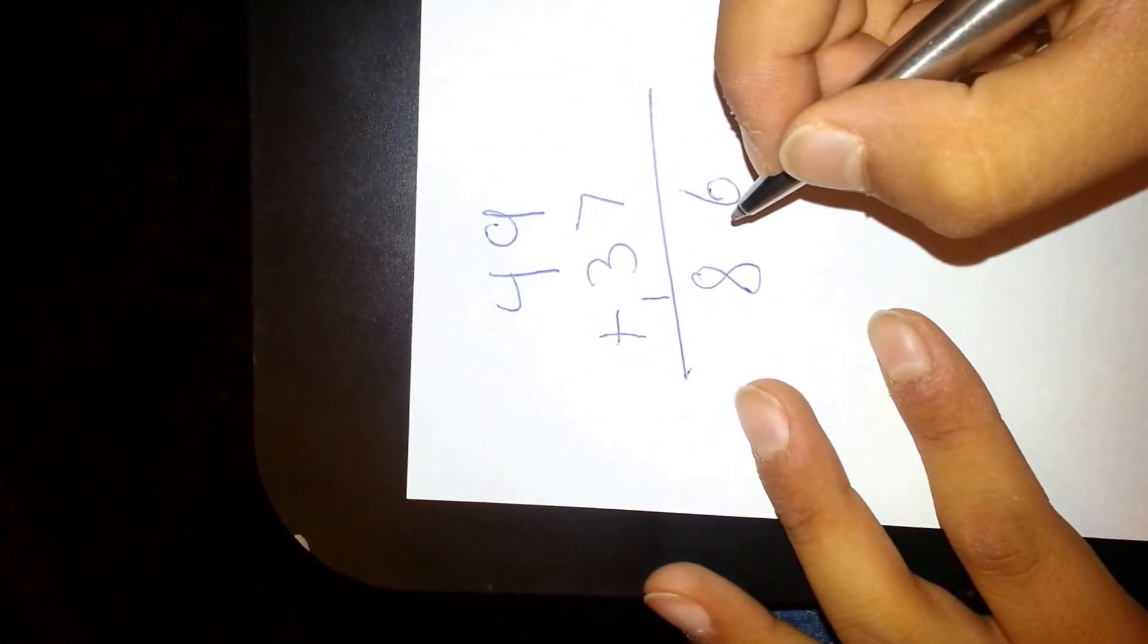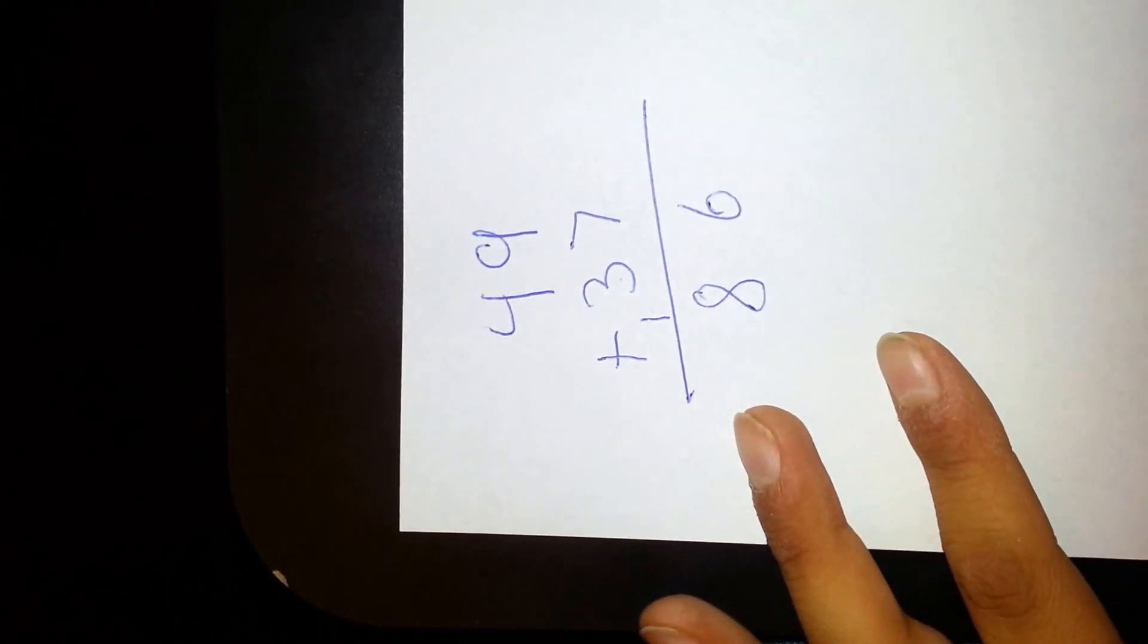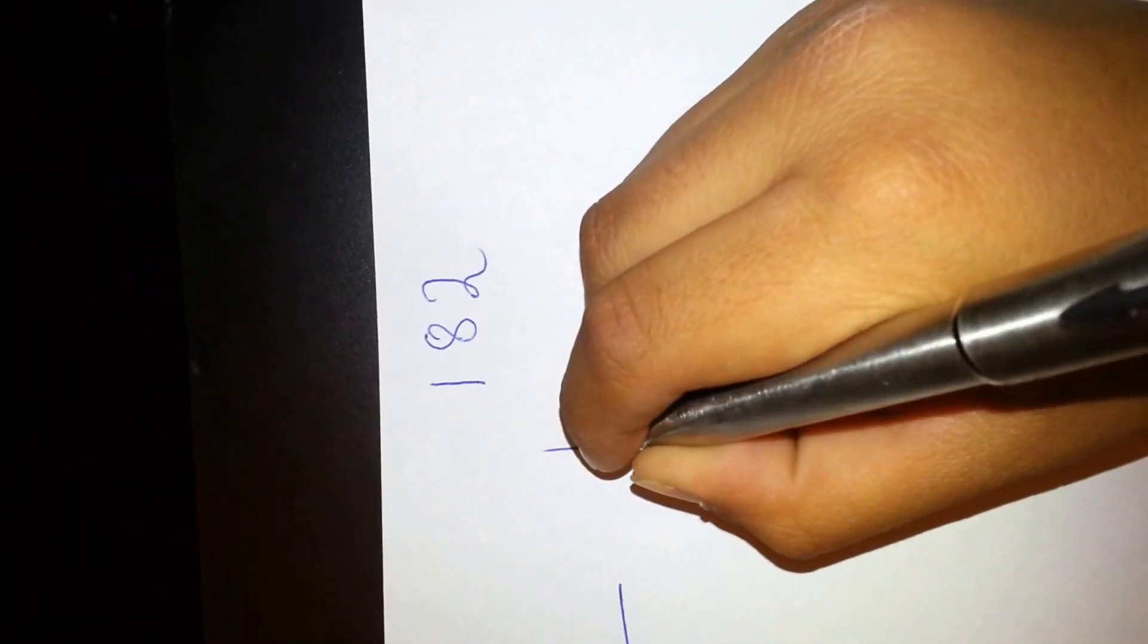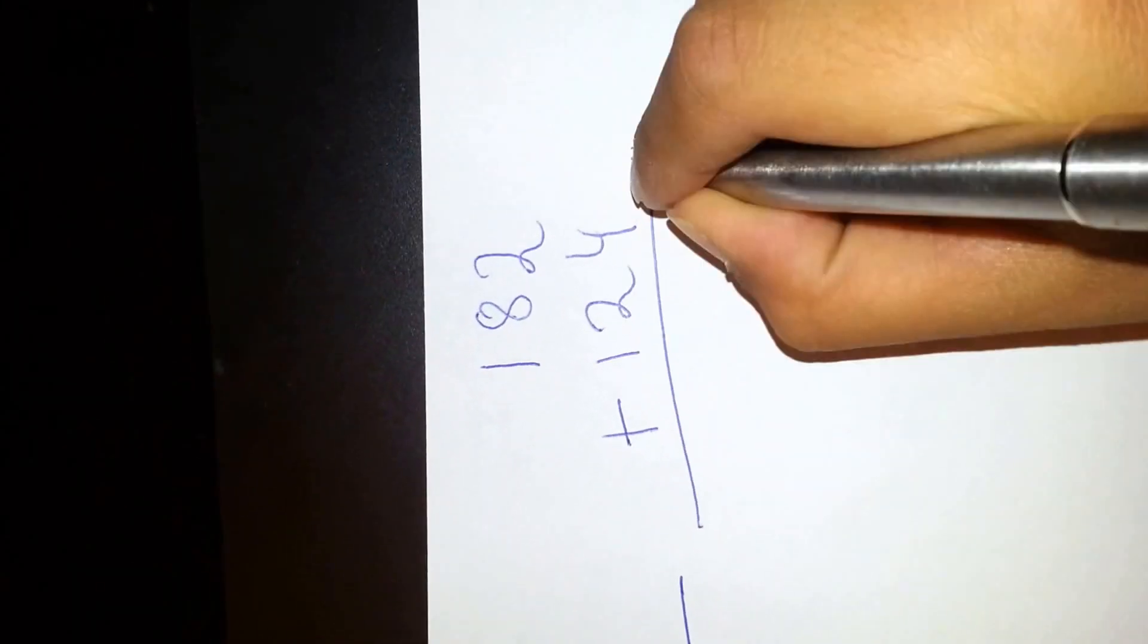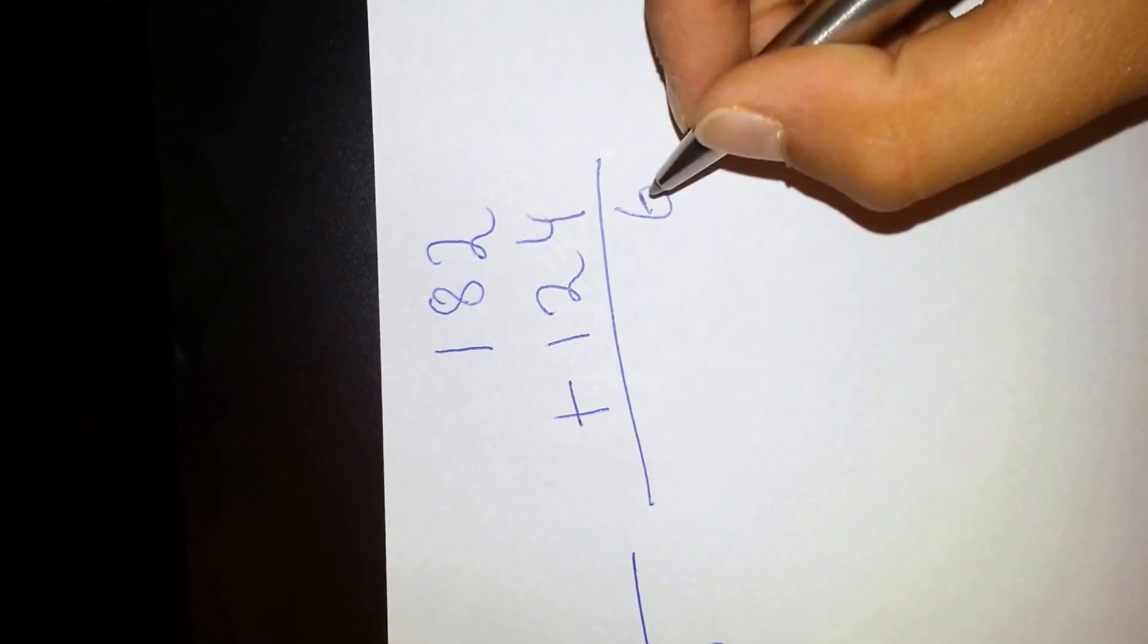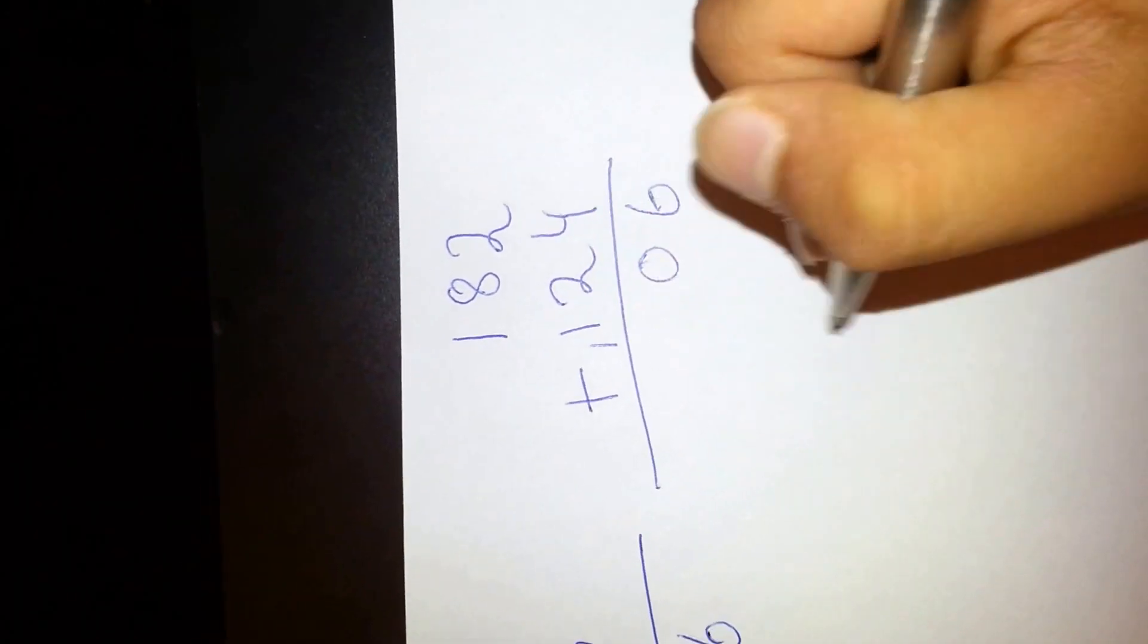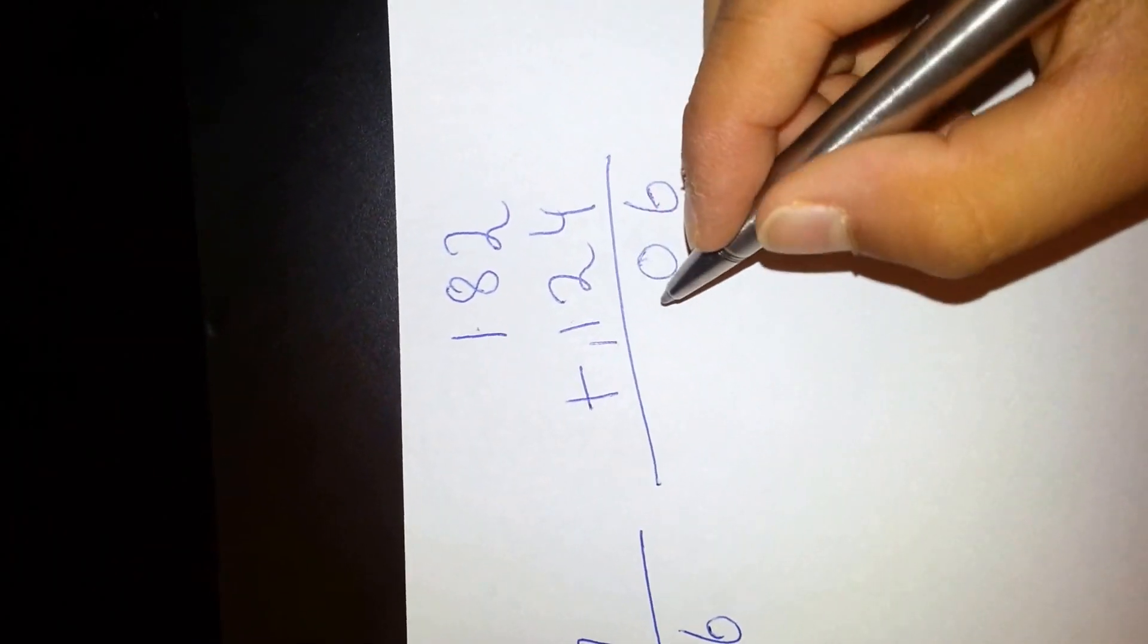Now let's do another example: 182 plus 124. 2 plus 4 is obviously 6. Now 8 plus 2 is 10, so you put down a 0 and carry over the 1. Now here's a simple one: 1 plus 1 plus 1, what do you think it is? 3. So the answer is 306.